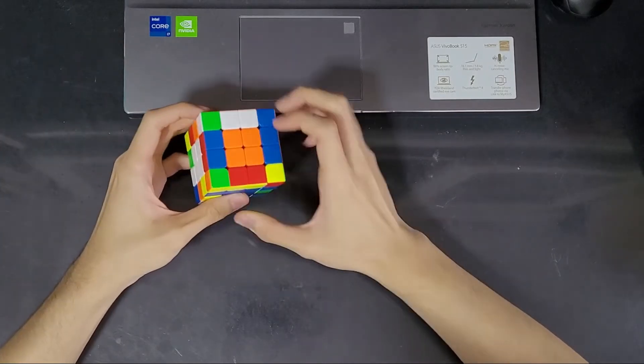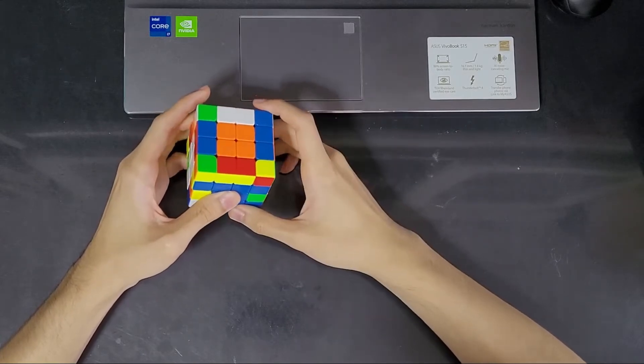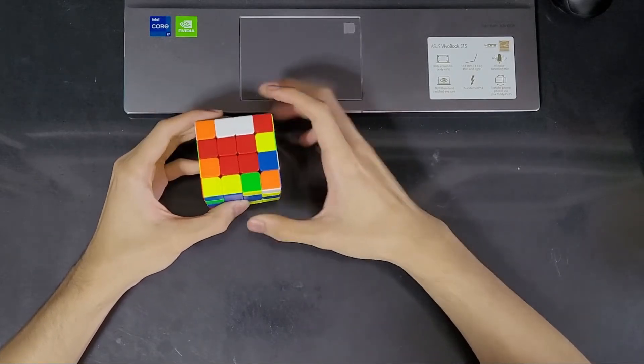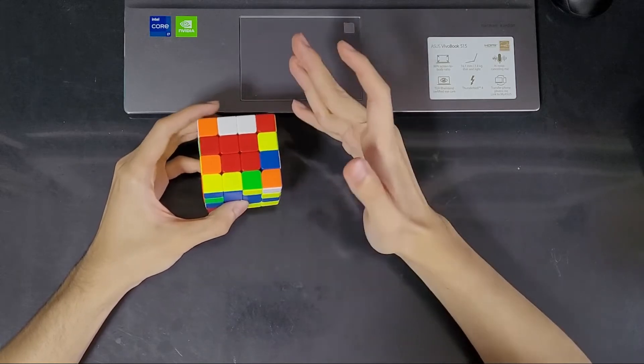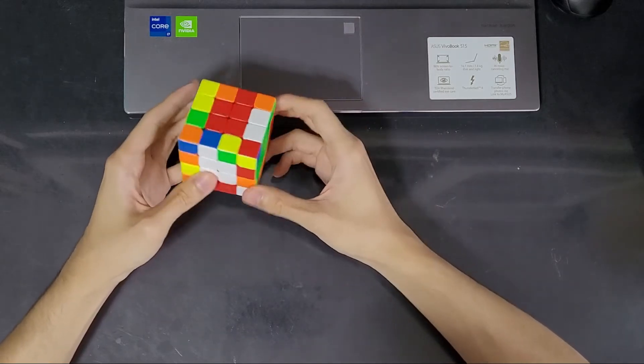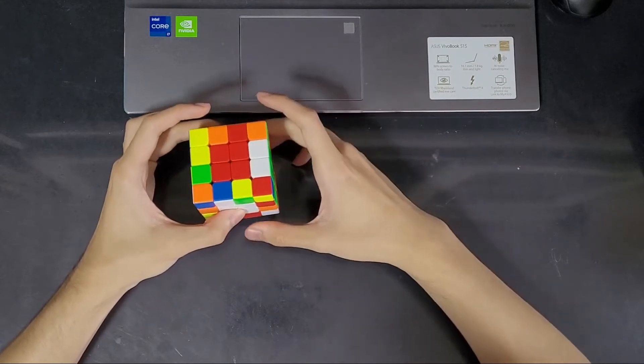Another thing you can do as you are running out of scrambled edges to replace your new solved edges is just to flip the cube over. Because there are more scrambled pieces on the opposite side for you to solve. And you may need to flip the cube over more than once if you are looking for pieces.